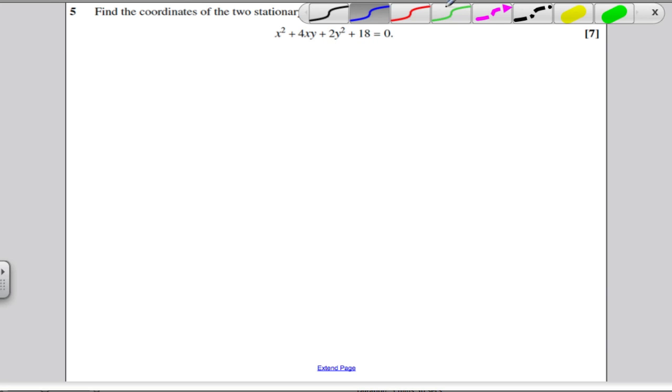Let's find dy by dx. I'm going to differentiate everything with respect to x that I see. The differential of x squared is 2x.